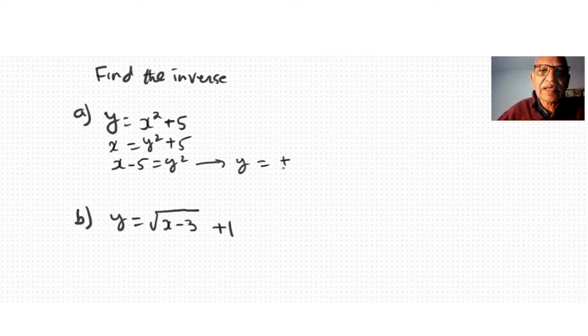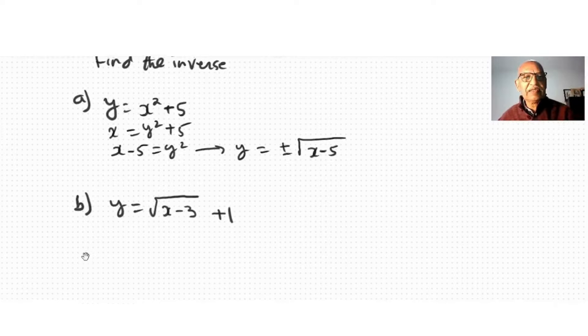Therefore, we have to find y, which means y equal to plus minus square root of x minus 5. We write plus minus whenever we write the square root. That's the inverse of this function here.